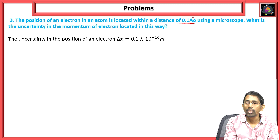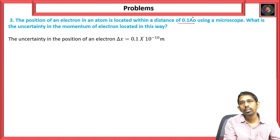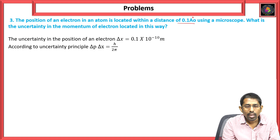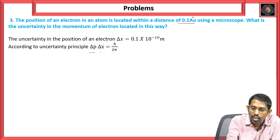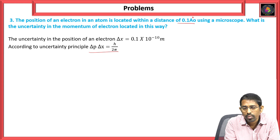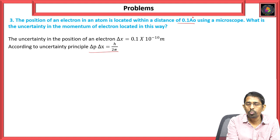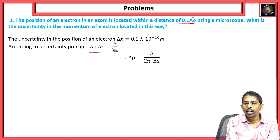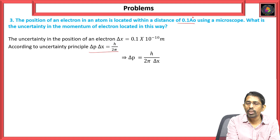1 angstrom = 10⁻¹⁰ meters, so we write in terms of meters. According to the uncertainty principle, the equation is delta x · delta p = h / 2π. We cross-multiply to get delta p = h / (2π · delta x).